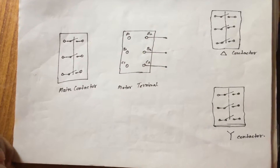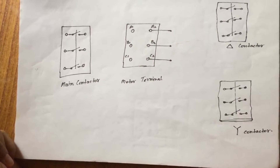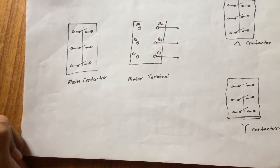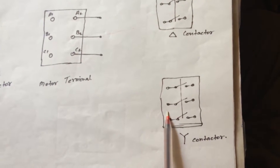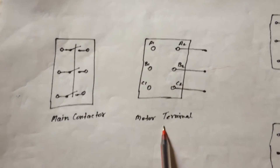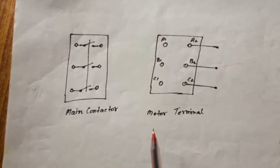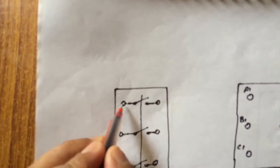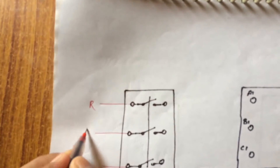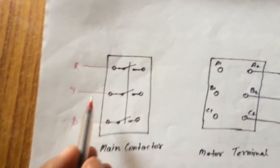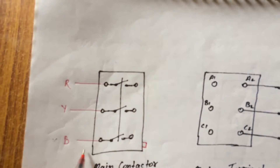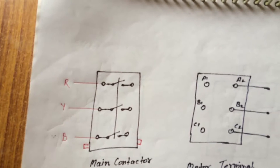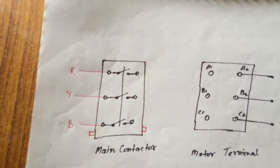Now let's discuss about the connection. First, let's connect all the main connections for the starter. As you can see, there is a main contactor, a delta contactor, and a star contactor. In between, I have motor terminals. The main contactor is always fed directly three phase into it — R, Y, and B. Remember, the contactors are never going to work unless their electromagnets are being energized. So even when we have our main connections, the contactors will not activate.